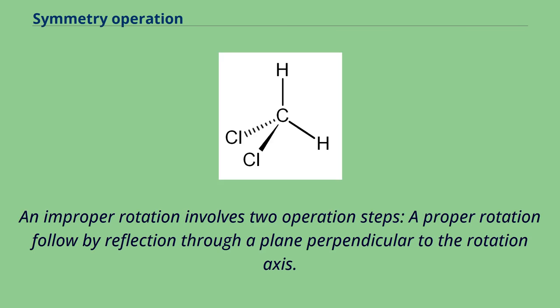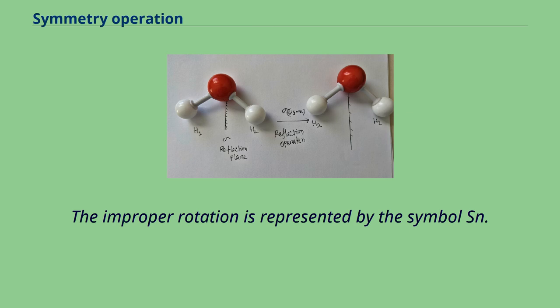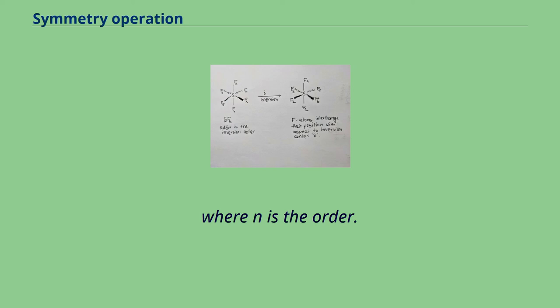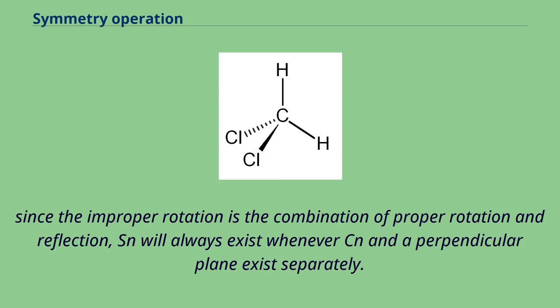An improper rotation involves two operation steps, a proper rotation followed by reflection through a plane perpendicular to the rotation axis. The improper rotation is represented by the symbol Sn, where n is the order. Since the improper rotation is the combination of proper rotation and reflection, Sn will always exist whenever Cn and a perpendicular plane exist separately.